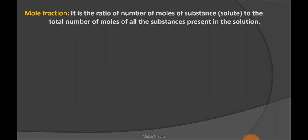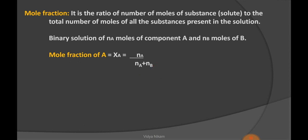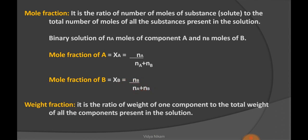Next point is mole fraction. It is the ratio of number of moles of a substance (solute) to the total number of moles of all substances present in the solution. For example, suppose a binary solution is made by two components: N_A moles of component A and N_B moles of component B. Then mole fraction of component A, X_A = N_A / (N_A + N_B). Similarly, mole fraction of component B, X_B = N_B / (N_A + N_B). Weight fraction is the ratio of weight of one component to the total weight of all components present in the solution.